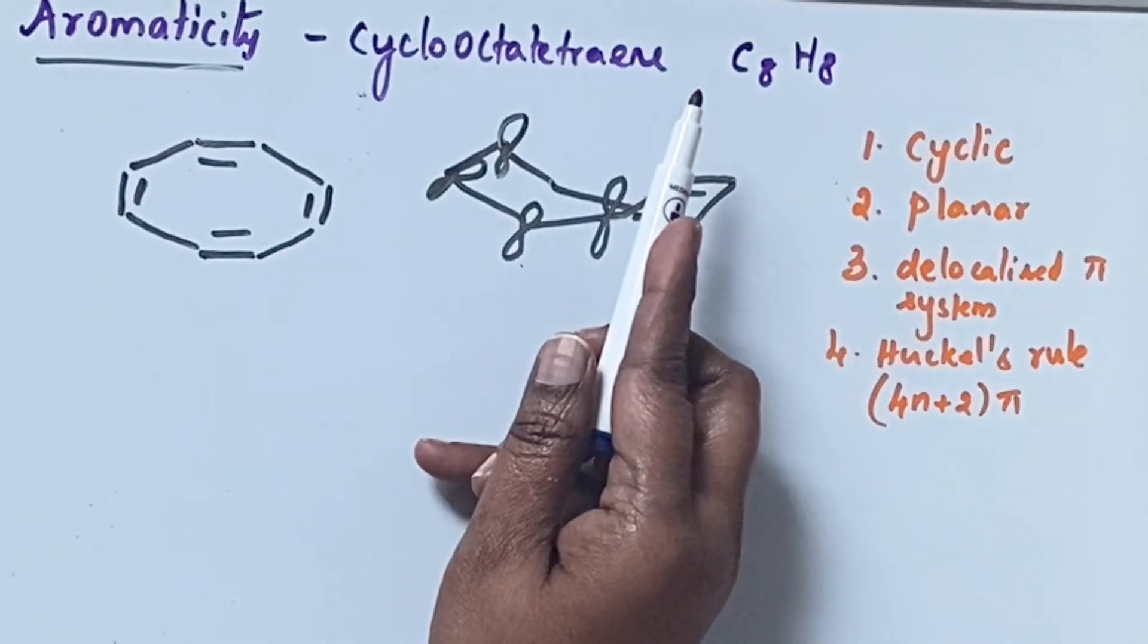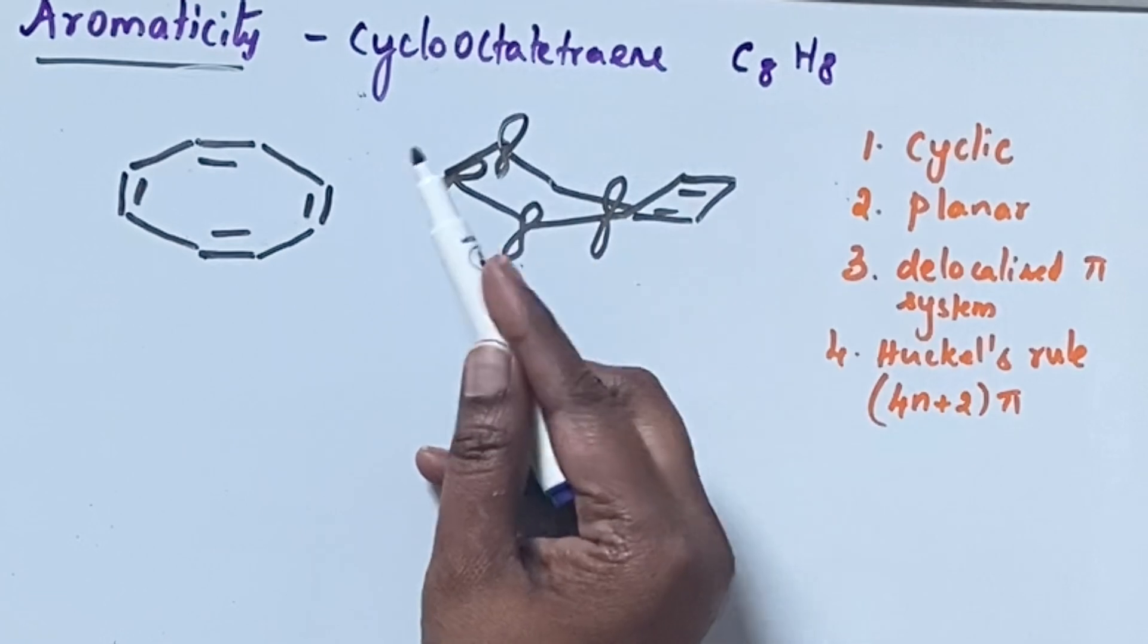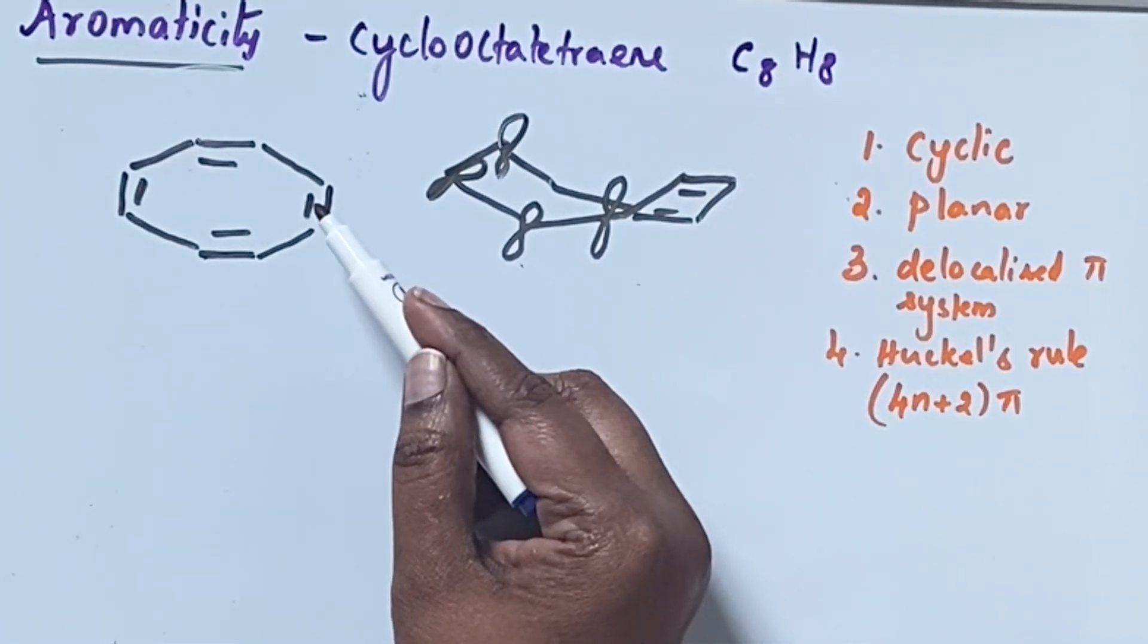Cyclooctatetraene its molecular formula is C8H8. Looking at the structure we may think it's benzene-like in nature.